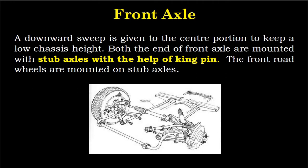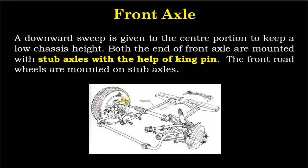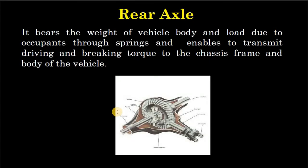आगे के axle को बीच वाले हिस्से में नीचे की और sweep देकर chassis की उंचाई कम रखी जाती है। Front axle के दोनों सिरों पर kingpin की सहायता से stub axle लगाया जाता है। सड़क पर चलने वाले अगले पहिए stub axle पर लगाए जाते हैं। यह हमारा front axle है, इस तरह का दिखता है, और इसके साथ stub axle लगाया है।